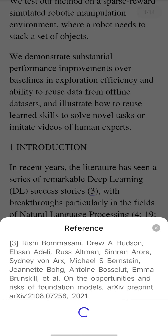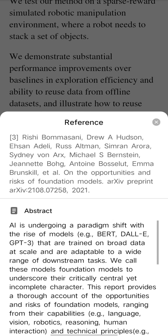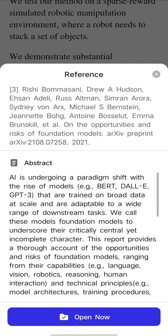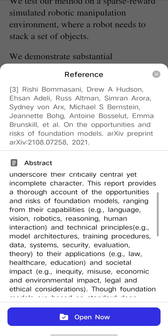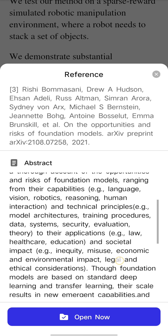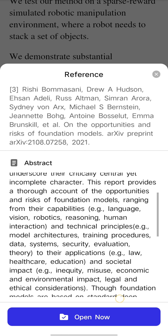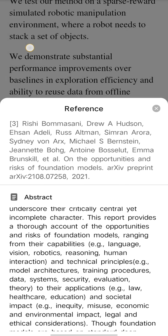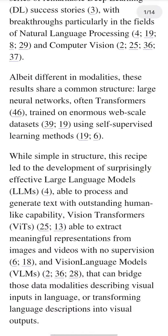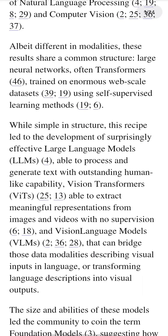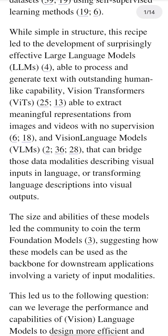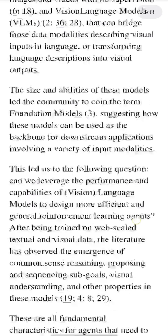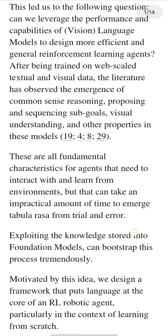This workshop paper proposes a framework that leverages language as a core reasoning tool to enhance the capabilities of reinforcement learning (RL) agents. The authors argue that while RL has shown remarkable success in various domains, it still faces several fundamental challenges, such as exploration, data reuse, skill scheduling, and observation learning. They suggest that language models and vision language models, which have recently achieved impressive results in natural language processing and computer vision, can help overcome these challenges and enable more efficient and general RL.